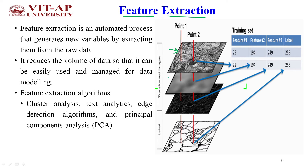An image has three layers: R, G, and B. A single pixel in all three layers gives three feature values — feature number one, feature number two, and feature number three. Each pixel provides three different values, and this process is called feature extraction. This is an automated process that generates new features by extracting them from the given input image from raw data.